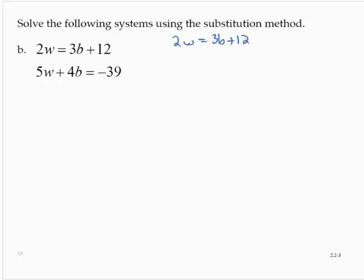Dividing through by 2 in each term, I would have w equals 1.5b plus 6. That's what I will use to substitute for w in the other equation.